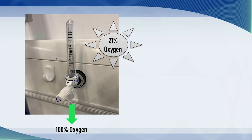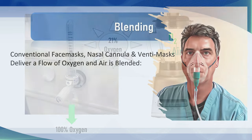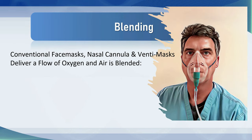When you place a patient on a mechanical ventilator and dial up an FiO2 between 21% and 100%, you don't usually consider how the ventilator manages to deliver that exact FiO2. What it has inside is a blender — it mixes the oxygen and air together and precisely controls the output. Conventional face masks, nasal cannulae, and venti masks also deliver a flow of oxygen that is blended — in the airway in the case of nasal cannulae, in the mask and airway with simple face masks, and in the Venturi device with venti masks.